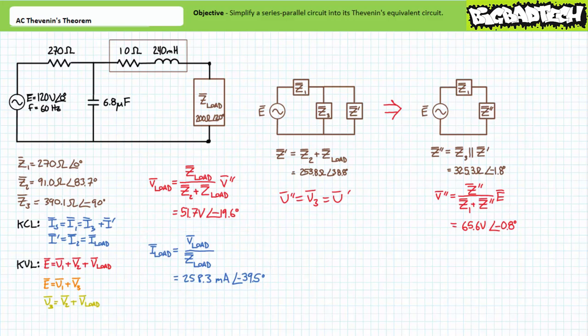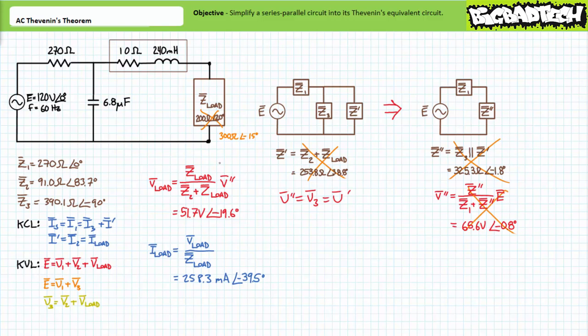Without the use of Thevenin's theorem, this necessitated a lengthy series-parallel circuit analysis. Despite the complications, we did solve for voltage across and current through our load impedance. Or did we? I'm sorry to say I just discovered an error in my previous calculations. ZLOAD was supposed to be an impedance of 300 ohms at an angle of negative 15 degrees. This means our earlier calculations for Z-prime, Z-double-prime, both voltage divider applications, and Ohm's law are all wrong. Let's pause and recalculate all the values.